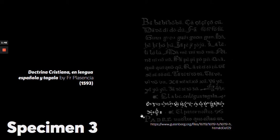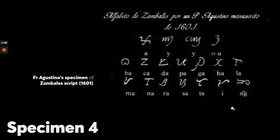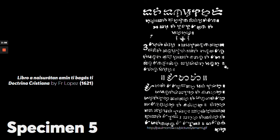In this specimen, you can see that there's a bit of a different order as compared to what you see right now. The fourth specimen shows a Ra specimen, specifically from Zambales. The fifth one shows a new innovation for Baybayin script, which is the Cruz Kudlit. This one was released in 1621.